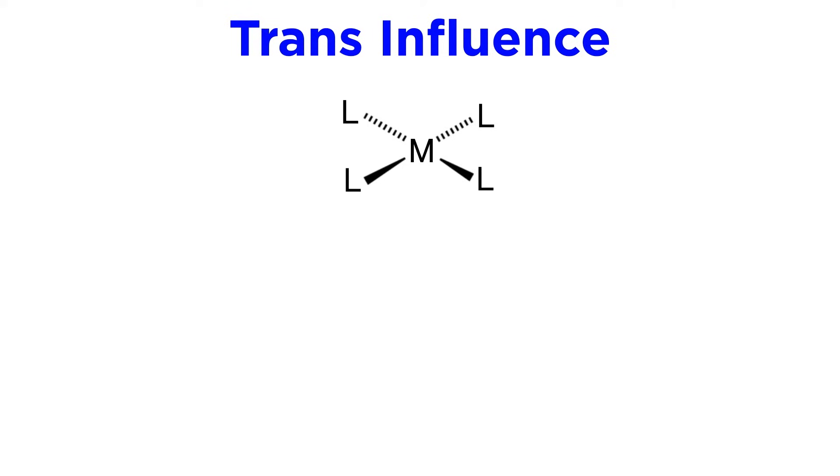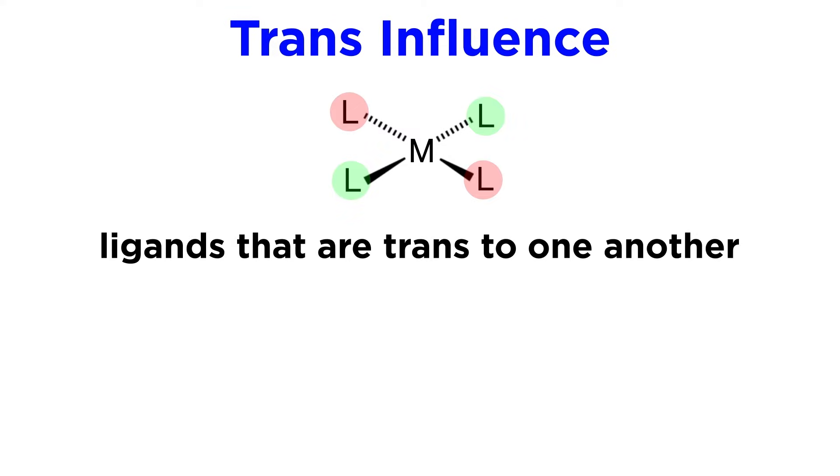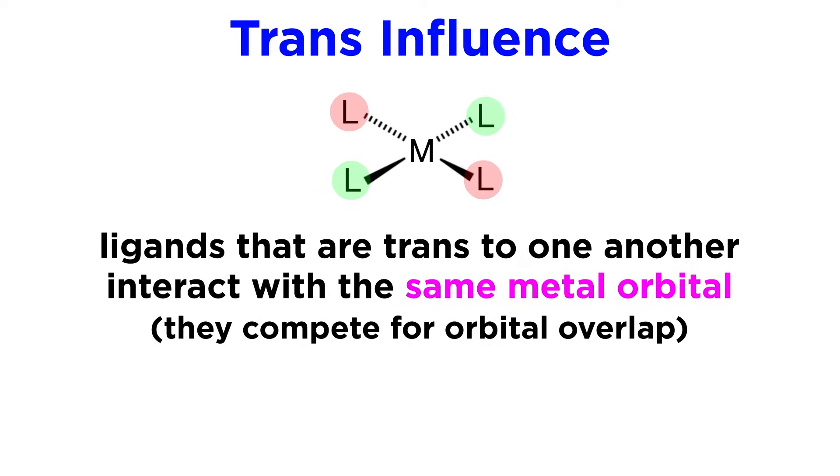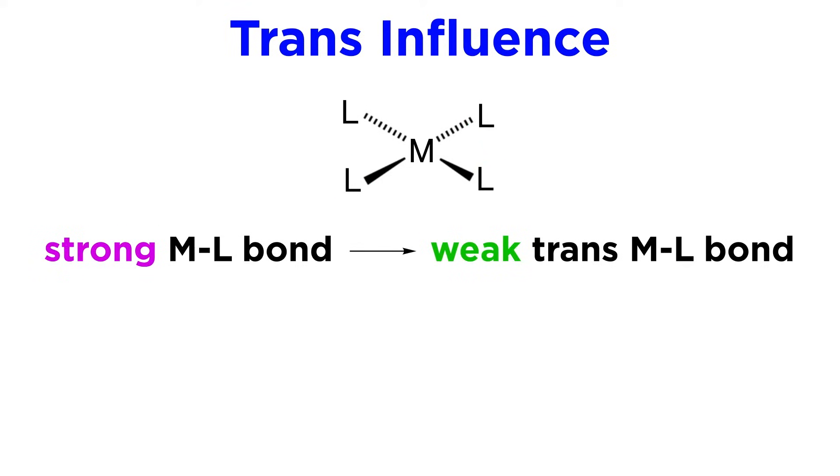This applies especially to square planar complexes, so let's look at those now. Ligands that are trans to one another in a transition metal complex, meaning those that are directly opposite one another along one line through the metal center, are interacting with the same orbital on the metal, so they influence one another and compete for orbital overlap. The stronger one bond is, the weaker the bond in the trans-position.